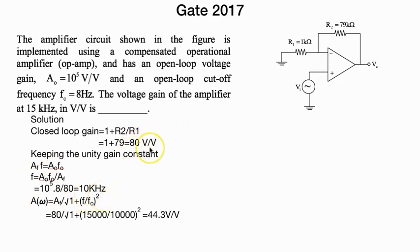If you need to know the gain at any frequency, such as that of 15 kilohertz, we use the formula A_F divided by square root of 1 plus F by F₀ squared. 80 divided by 1 plus 15,000 divided by 10,000. This is the closed loop gain frequency.